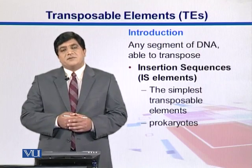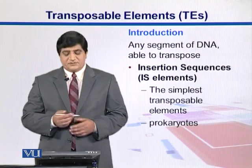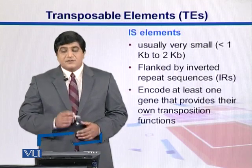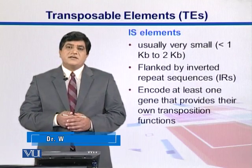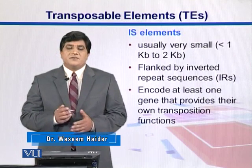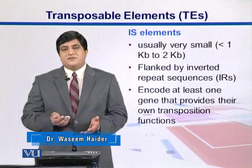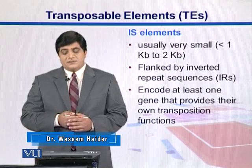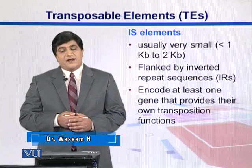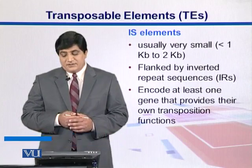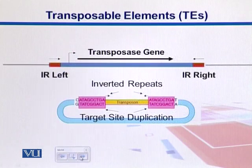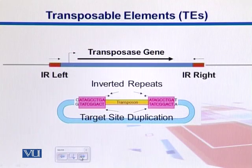The simplest example of them is insertion sequences, which are related to prokaryotes. They are small; their sizes range from less than 1 kb to a maximum of 2 kb. They are flanked by inverted repeats and they encode at least one gene responsible for their transposition. Generally, they don't encode for other functions or additional characters.